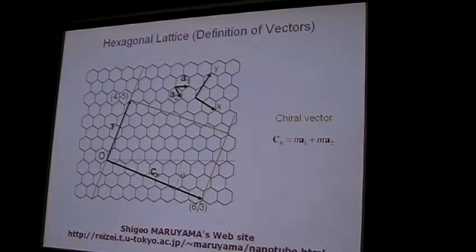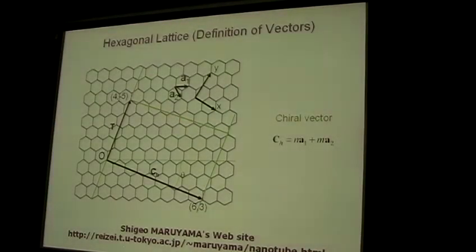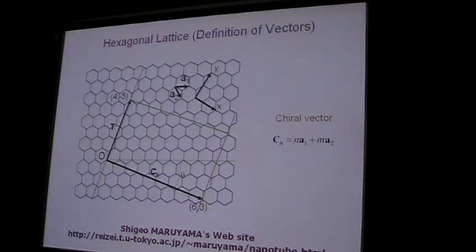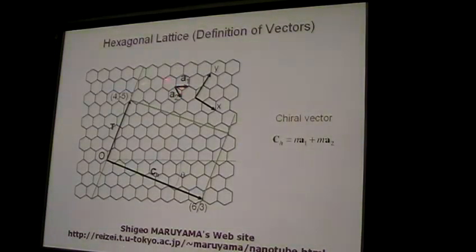To characterize nanotubes, we use lattice vectors — two vectors in the hexagonal lattice of a graphene sheet. For example, this is the origin, and this is the vector to define the location of points in this lattice.